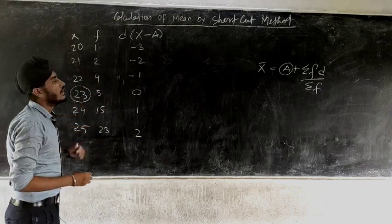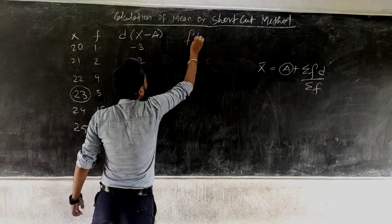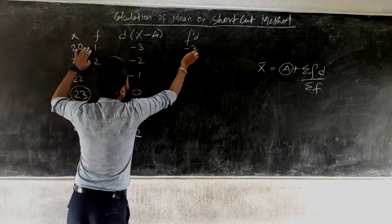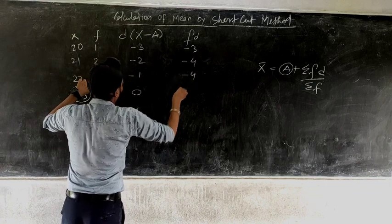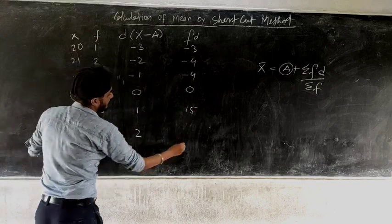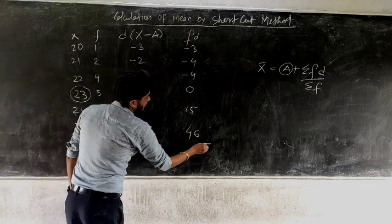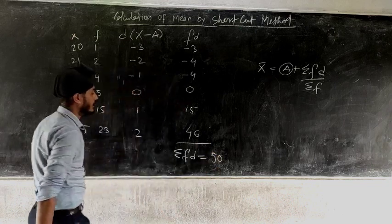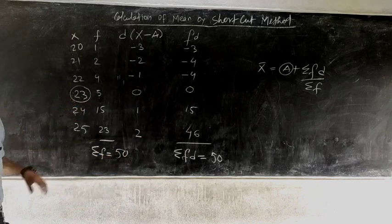Now we need to find Σfd, so we prepare one more column of fd by multiplying f × d: 1 × (−3) = −3, 2 × (−2) = −4, 4 × (−1) = −4, 5 × 0 = 0, 15 × 1 = 15, 23 × 2 = 46. When we total the fd column we get Σfd = 50. And Σf is again 50, same as in the previous question.